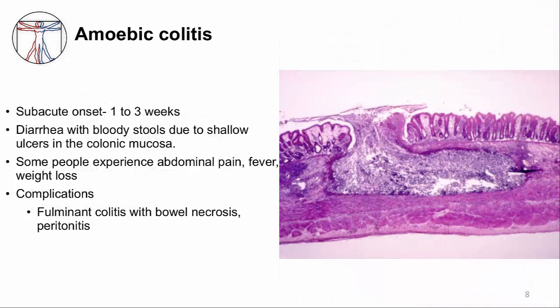Intestinal disease is known as amoebic colitis or dysentery. It presents with bloody diarrhea, abdominal pain, and fever that is slow to develop over a period of weeks, in contrast to days that you might see with bacterial infections. Local complications of these ulcers in the colon include perforation of the colon with bowel necrosis and potential seeding of bacteria into the peritoneum causing peritonitis. This is what kills people.